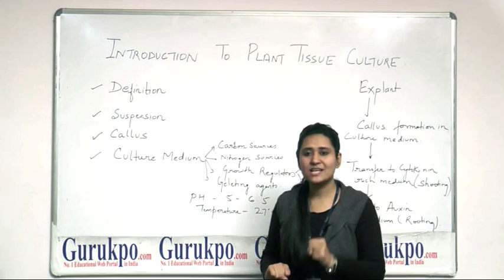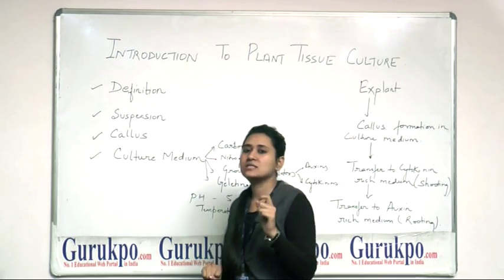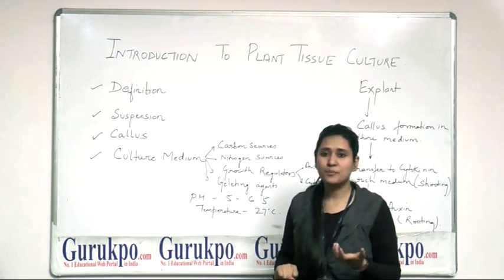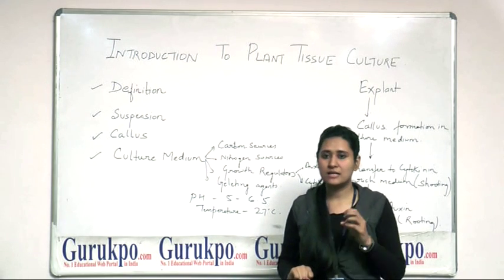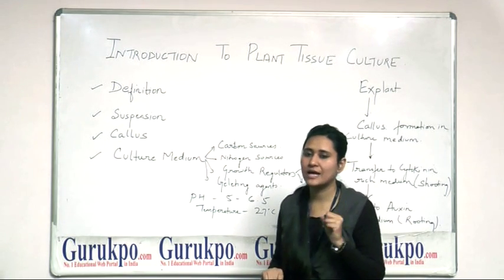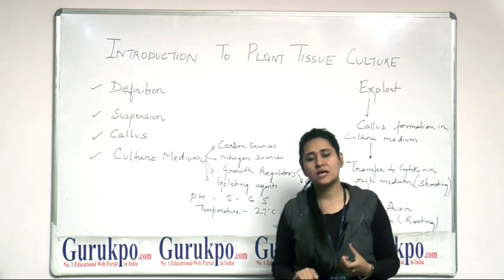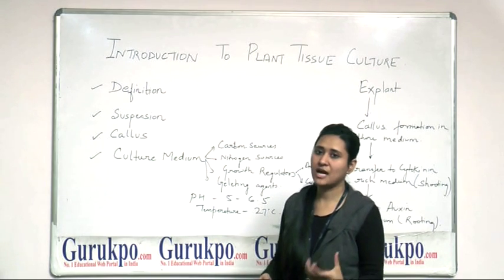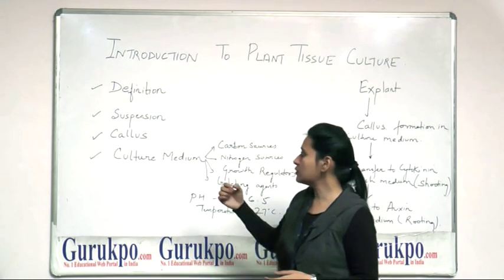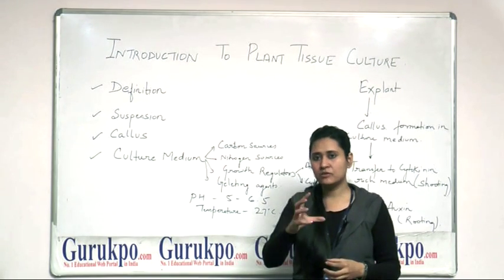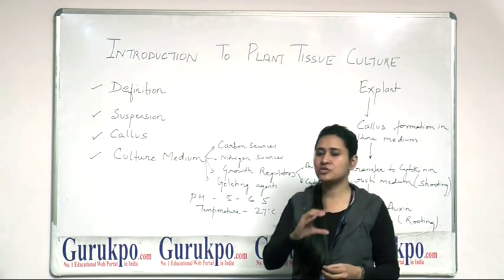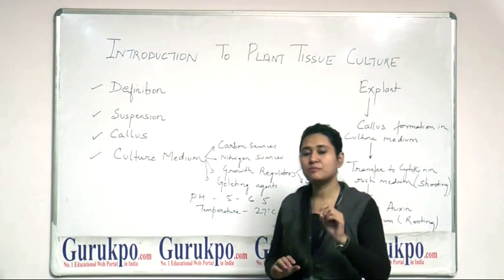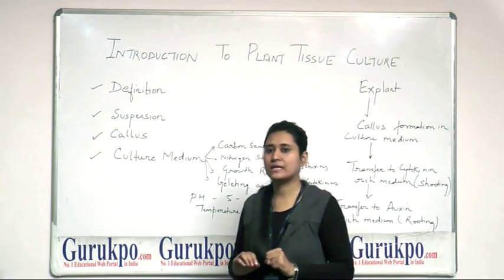What is an explant? An explant is a portion, or you can say a part, from the original plant. It can be a stem, it can be an anther, it can be a shoot. That particular part of the original plant is called the explant, and that explant forms callus.